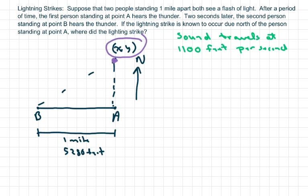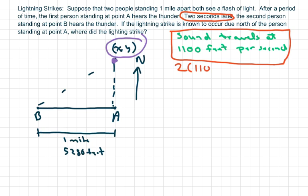Another information you need to know is sound travels at 1100 feet per second. And so the person at point A is 2200 feet closer to the lightning strike than the person at point B, because they were talking about two seconds later. So two times 1100, he's closer to the lightning strike in that manner.